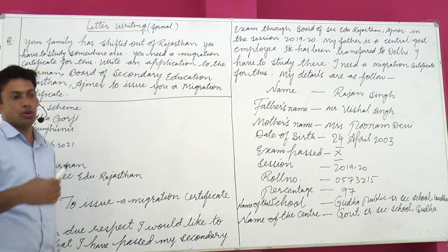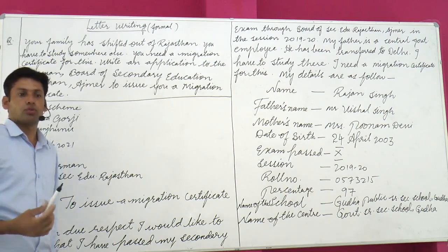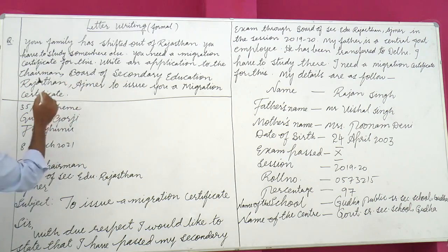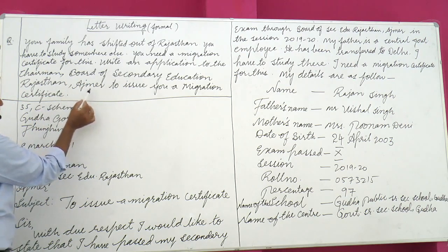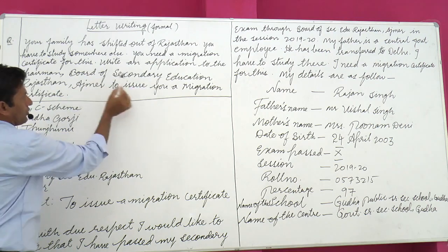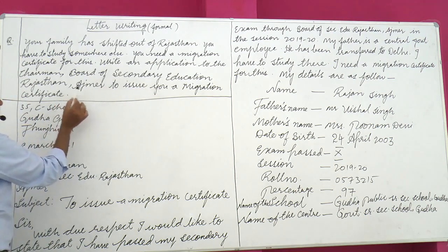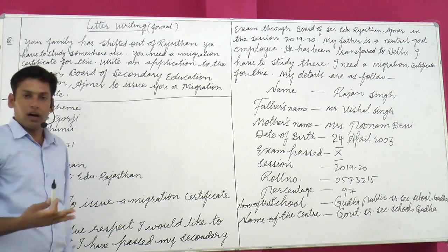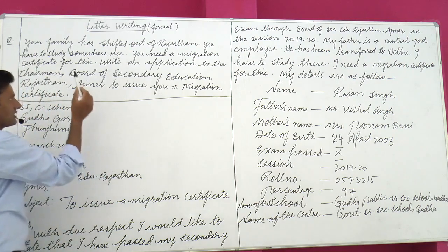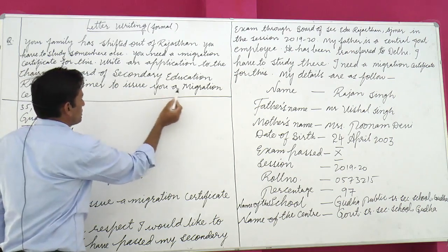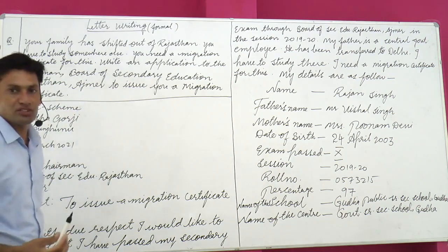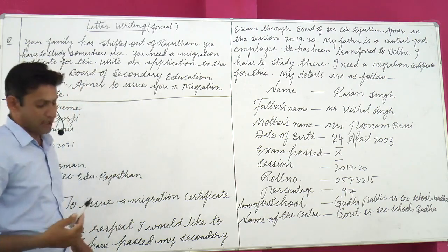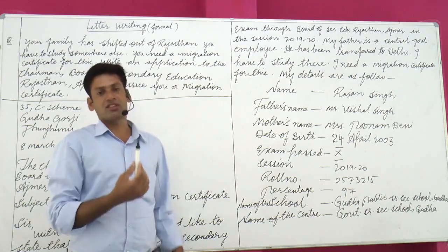This board governs the school education you are pursuing. You have to write to the Chairman of this board. Rajasthan comes first because the board's name includes Rajasthan, then a comma, then Ajmer — meaning the board's office is located in Ajmer. The purpose of writing is: to issue you a migration certificate.